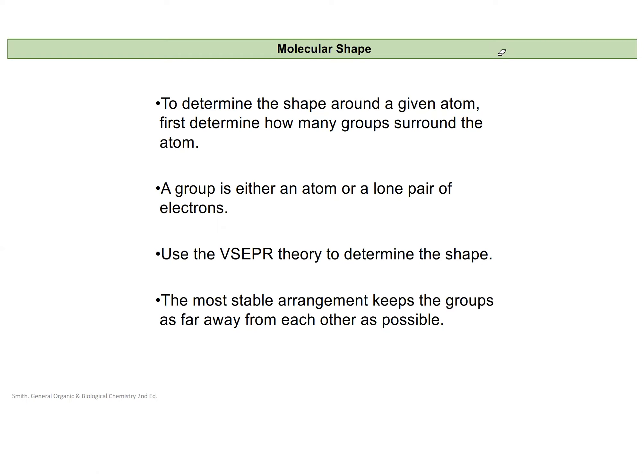To determine that, we're going to first determine how many groups surround the atom. And by groups, I really mean things that have electrons, because electron groups are going to have this negative charge around them. And it's repelling negative charges that create the actual structure or the shape that we see.